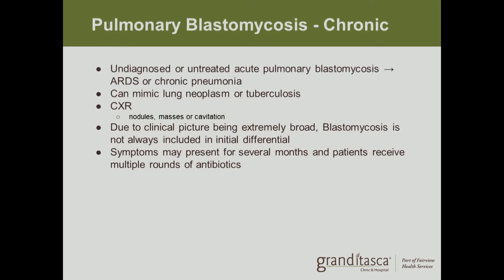If pulmonary blastomycosis isn't treated promptly, it can present as chronic pulmonary blastomycosis due to underdiagnosis or lack of treatment, causing chronic pneumonia or ARDS. On chest x-ray, chronic blastomycosis can mimic a lung neoplasm or tuberculosis, appearing as nodules, masses, or even cavitations. Because the clinical picture is extremely broad, blastomycosis is not always included in the initial differential, and patients may receive multiple rounds of antibiotics before blastomycosis is considered.